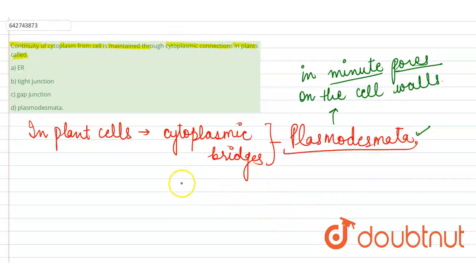What is the function, the function of this plasmodesmata? This plasmodesmata forms the continuation of protoplasm, protoplasmic continuation, which is known as symplast.